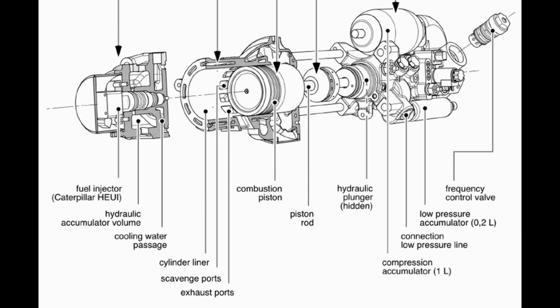For example, a linear alternator is coupled with the piston of the FP engine for the generation of electricity. Note: for some applications of the FP engine, like the air compressor and turbine rotation, no loading device is used to obtain mechanical work.